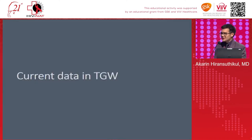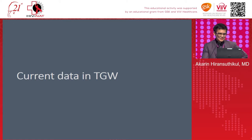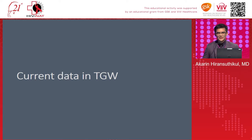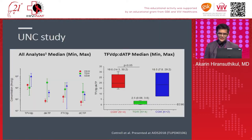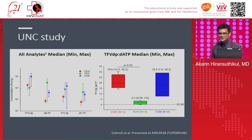That leads to the current data on GA-HT drug interactions with ARV — specifically PrEP, as we don't yet have ART data. I have three studies to present, all from 2018. The first study is from Dr. Cottrell and her team at UNC, with the objective of assessing intracellular pharmacology at HIV transmission sites — so they chose rectal tissue.